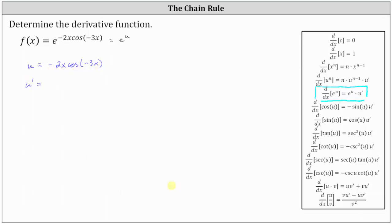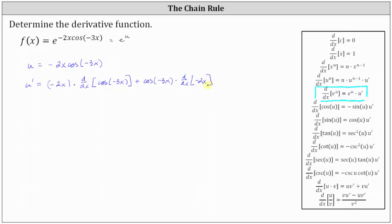And therefore u prime is equal to the first function of negative 2x times the derivative of the second function, which is the derivative of cosine negative 3x with respect to x. Notice to find this derivative, we will also have to apply the chain rule. And then we have plus the second function of cosine negative 3x times the derivative of the first function, which is the derivative of negative 2x with respect to x.